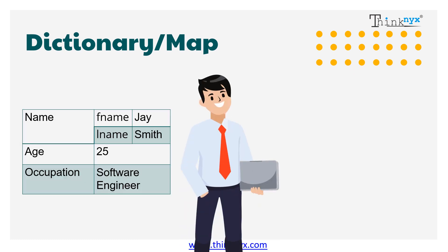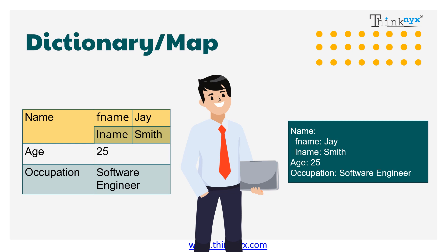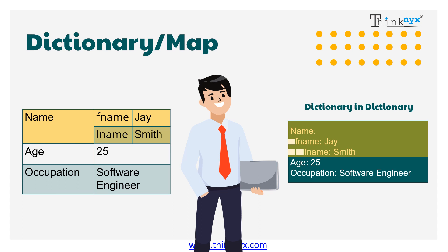Let's take the same example of Jay. This time, what if we want to separate his first name and last name? This is how we can do it using a YAML dictionary — we are splitting the name further into first name and last name. This is a dictionary inside another dictionary. Note that first name and last name are the elements of name, so we need to provide at least one space to indicate the same. Also, first name and last name should be equidistant from name. If you provide an extra space to last name, then last name becomes the child element of first name, which does not make any sense.